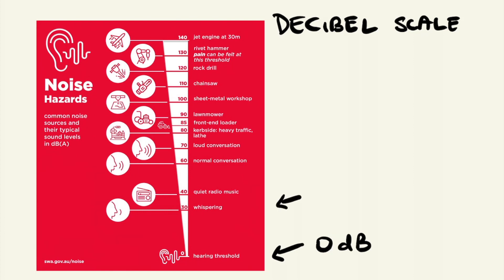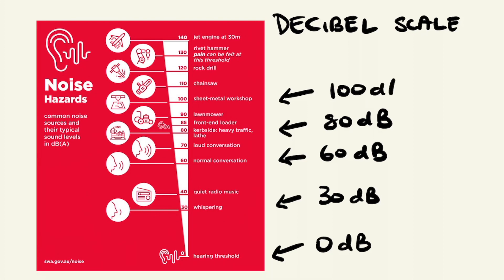Examples of decibel levels of different real life sounds include whispering at 30 decibels, normal conversation at 60 decibels, traffic at 80 decibels, industrial noise at 100 decibels, and up to 140 decibels produced by a jet engine.